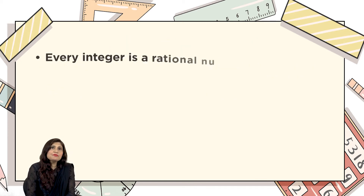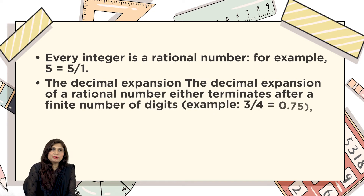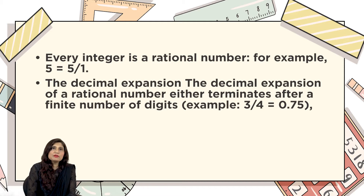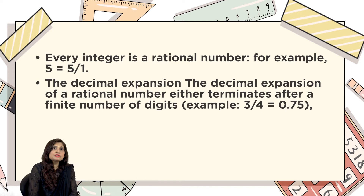Dear students, every integer is a rational number. For example, if you look at number 5, all of you know that number 5 is a whole number, but we can write this number in the form of a fraction by writing 1 as a denominator. So number 5 can be written as 5/1, and it's a rational number.